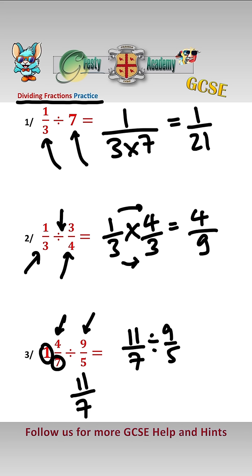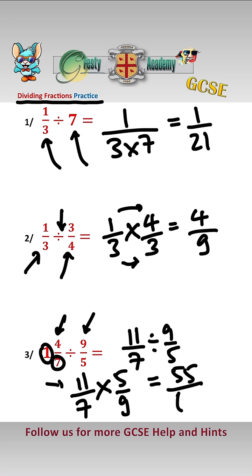Then we use the same method: flip the divide to multiply and flip the second fraction upside down, then multiply across. 11 times 5 is 55, and 7 times 9 is 63, so the answer to number 3 is 55 over 63.